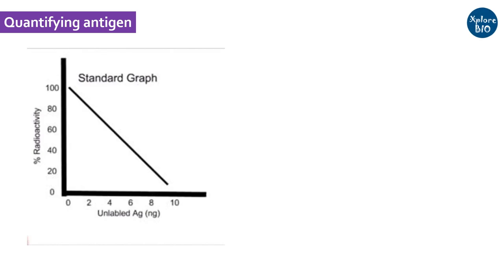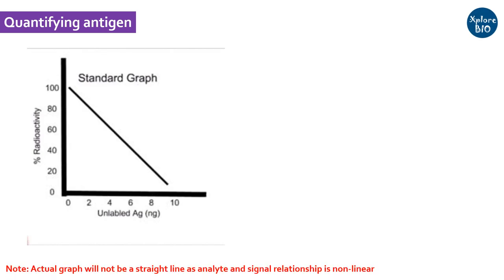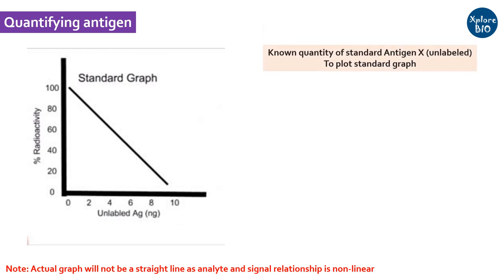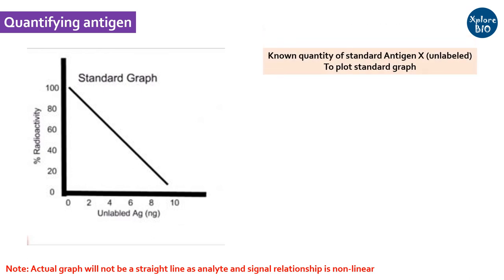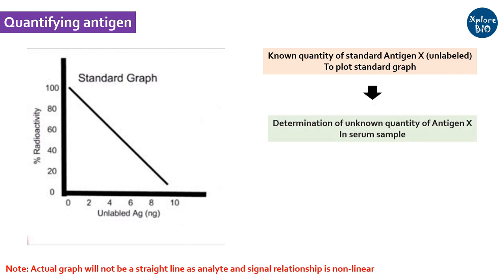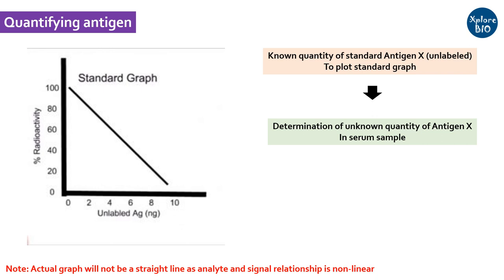To determine the concentration of antigen X, you need to plot a standard graph of antigen concentration versus radioactivity. For this, you have to use various known concentrations of unlabeled antigens and perform the assay. Measure the change in radioactivity with increase in unlabeled antigen concentration. Once you get a relationship, you can estimate the amount of unlabeled antigen X from the patient samples too.